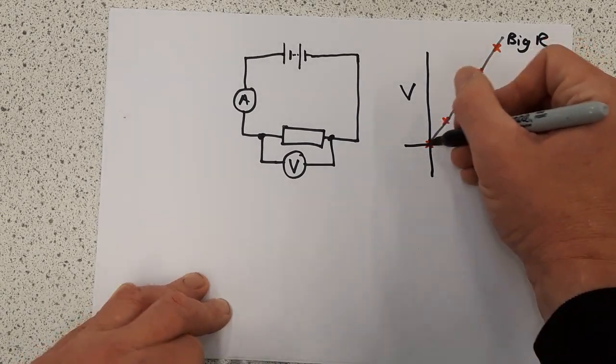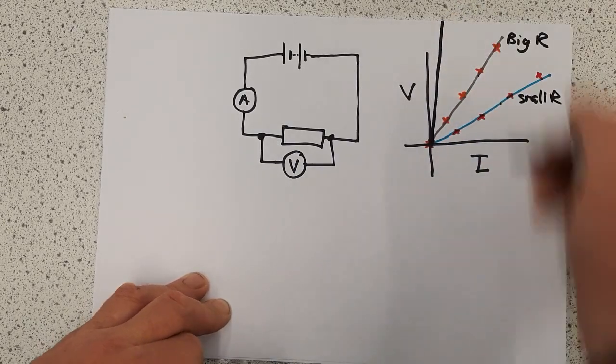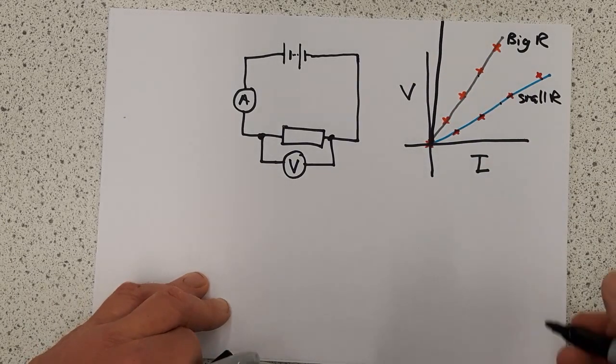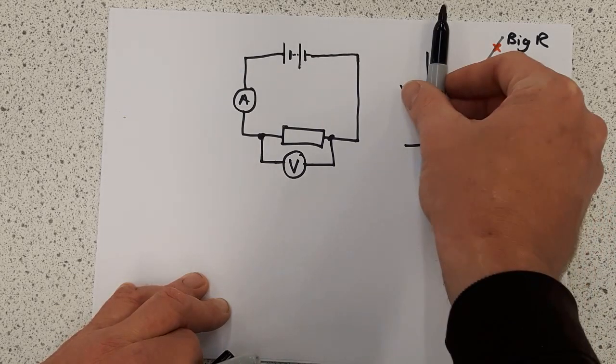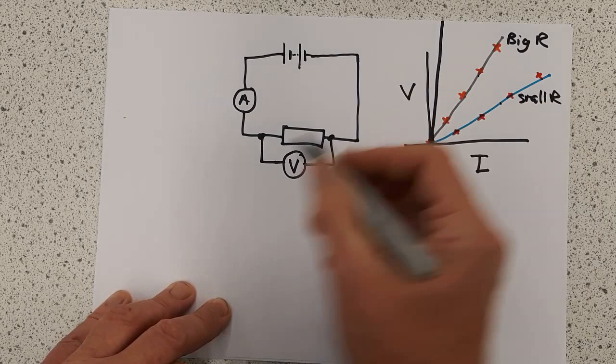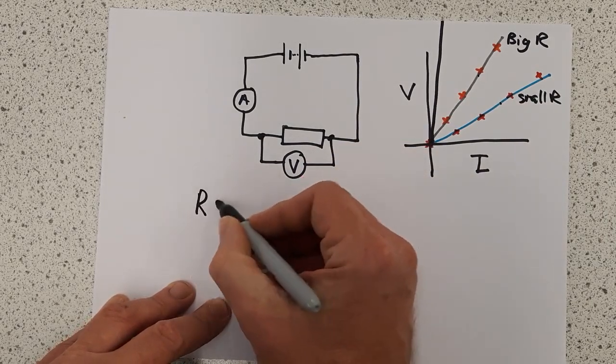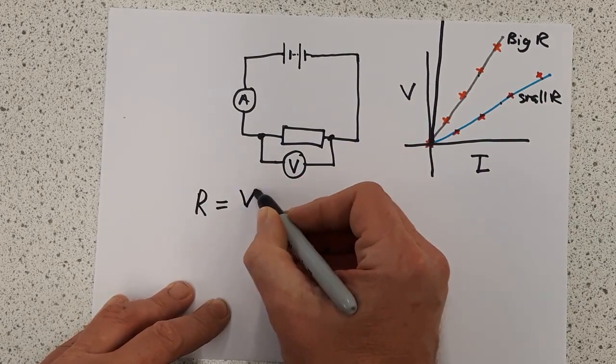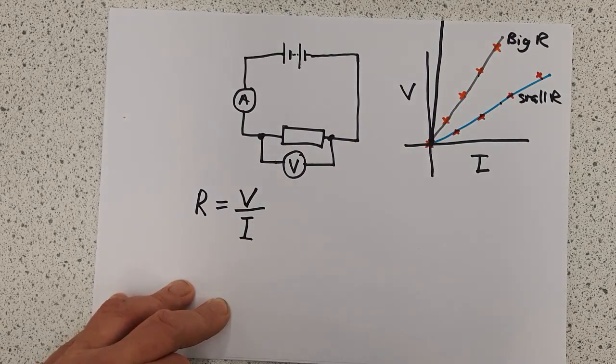And if I had an even bigger resistance, then I might get a graph line that goes like that. So there is a relationship here between the gradient of the graph line and the size of the resistance. In actual fact, resistance is defined as the gradient of the graph.